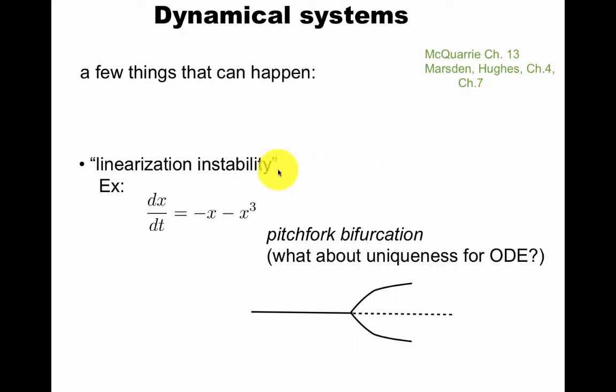Another thing that you may not think would happen in a simple system like this is you could have bifurcation. This is called a pitchfork, for obvious reasons. This might confuse you because you thought you had uniqueness for ordinary differential equations. So how could it be this apparent non-uniqueness at this point where it bifurcates into two pieces? This is very nicely discussed in this book on elasticity.